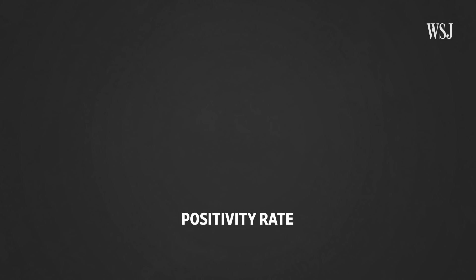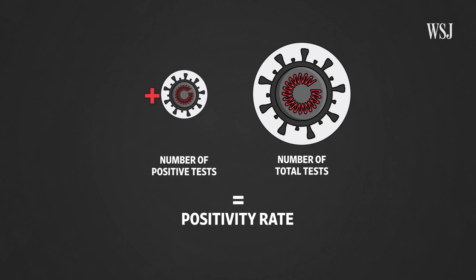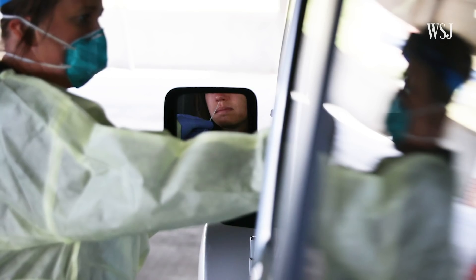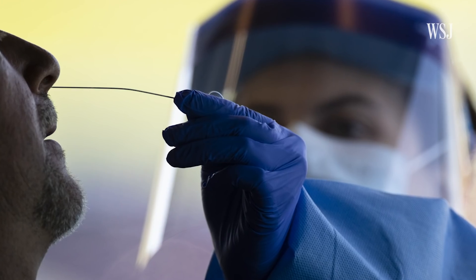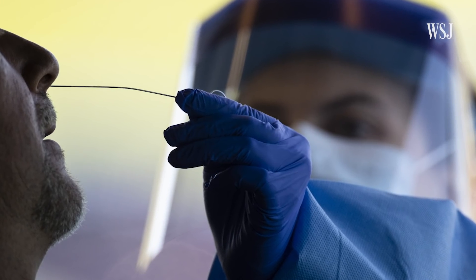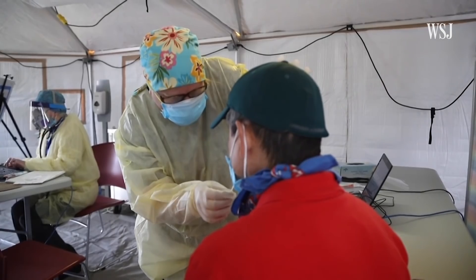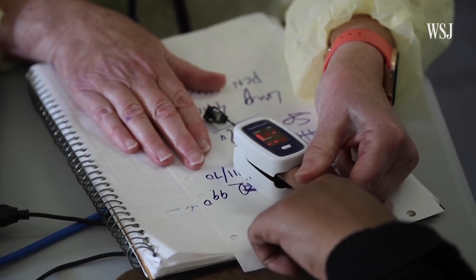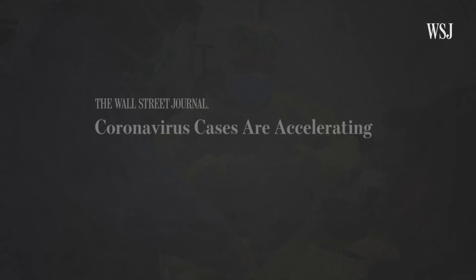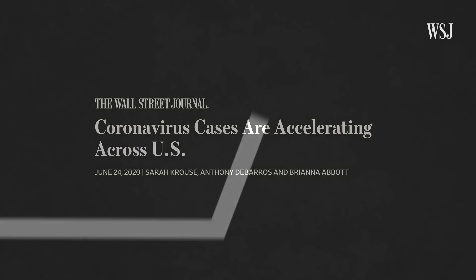Public health authorities also track the positivity rate, which compares the number of tests that come back positive with the total number of COVID-19 tests. If the positivity rate is high, that likely means all of the cases in the area aren't necessarily being caught. But if it's low, most cases are likely being captured and enough testing is being done. If the positivity rate is going up over time in a specific area, that likely means more cases are being found and the disease is spreading.